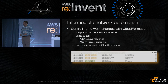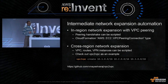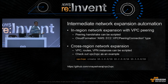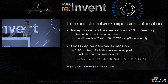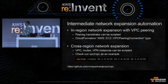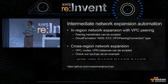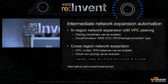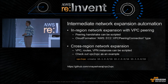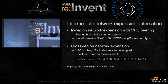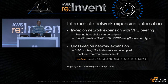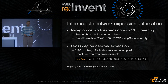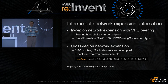You can also automate network expansion. For in-region expansion, you can use CloudFormation's VPC peering connection type to automate creation of VPC peering connections. For cross-region expansion, you can script the creation of VPCs, routes, and VPN instances. There's a utility called VPC-to-VPC that you can run with a simple command — specifying the CIDR blocks of VPCs — and it will scan your account, find the corresponding VPCs, and automatically create VPN instances and a VPN connection between them.